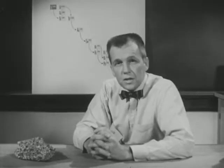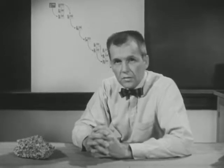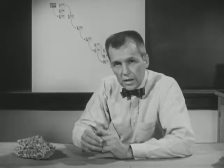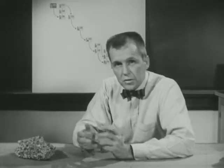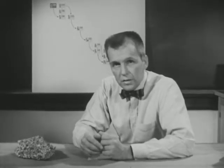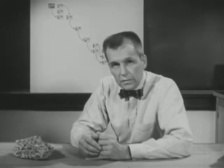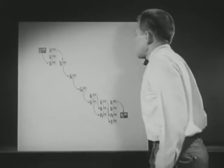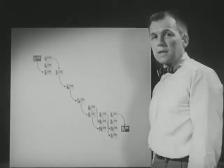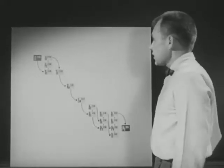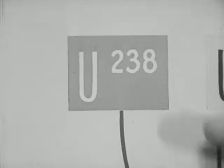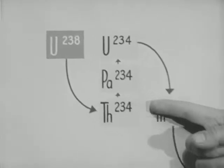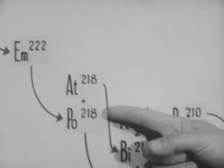Ever so often, an atom of uranium-238 changes into the atom of another radioactive element. This new atom changes into the atom of a third radioactive element, which in turn changes into another, and so forth. Such a sequence of radioactive atoms is called a decay chain. Not all radioactive atoms are members of a decay chain. But it has been shown that uranium-238 is the first atom of a decay chain, which ends with the stable product lead-206.